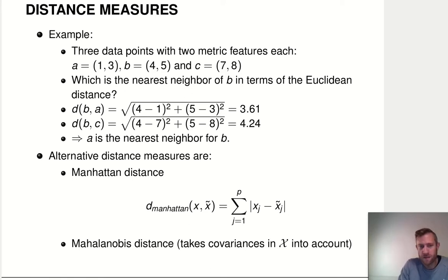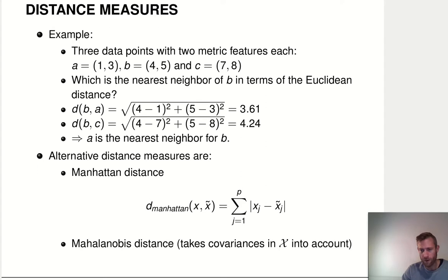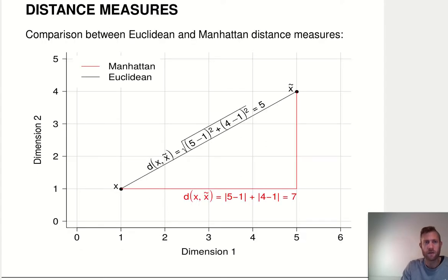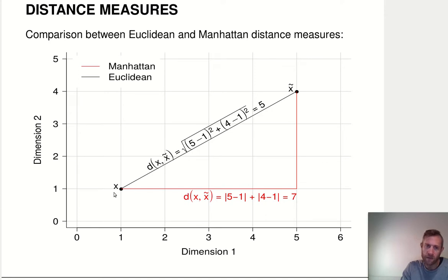Another very popular choice is the Mahalanobis distance, which also takes into account how the features are correlated with each other — but that's maybe for a later lecture. To summarize geometrically: the Manhattan distance is the sum of the distances along each axis, and the Euclidean distance is the length of the direct line from x to x-tilde. Those are the geometric interpretations of these two distance measures.